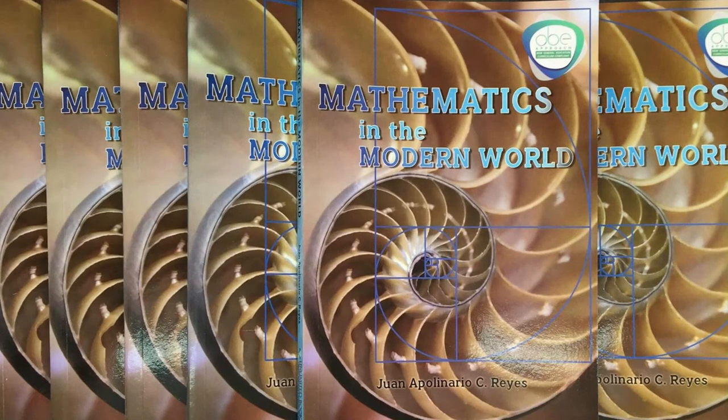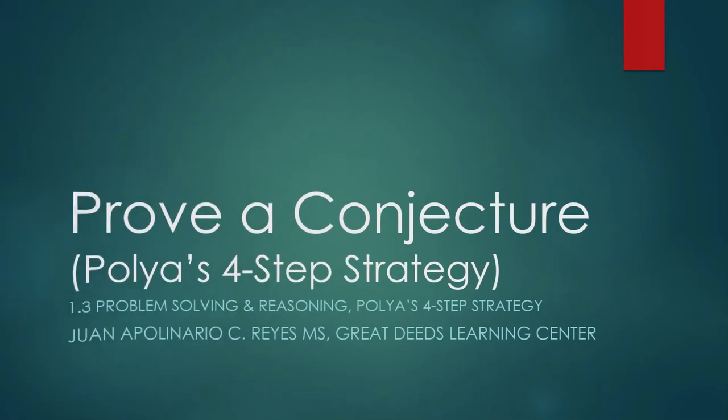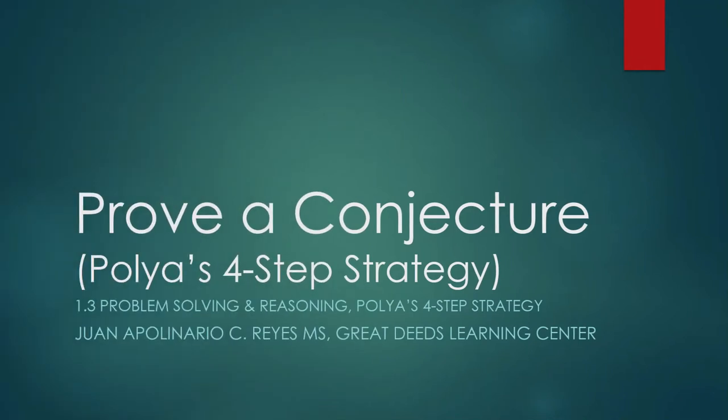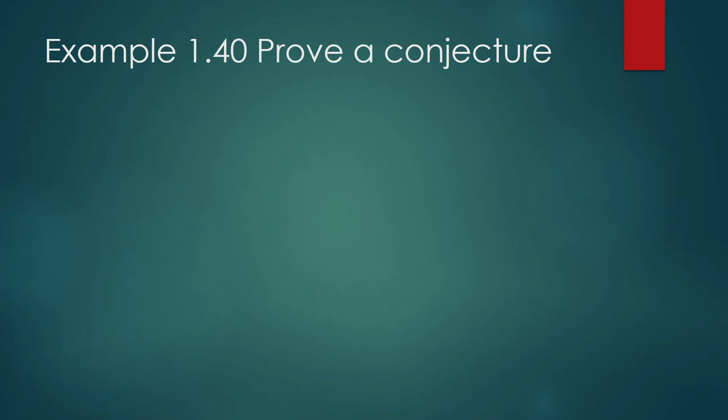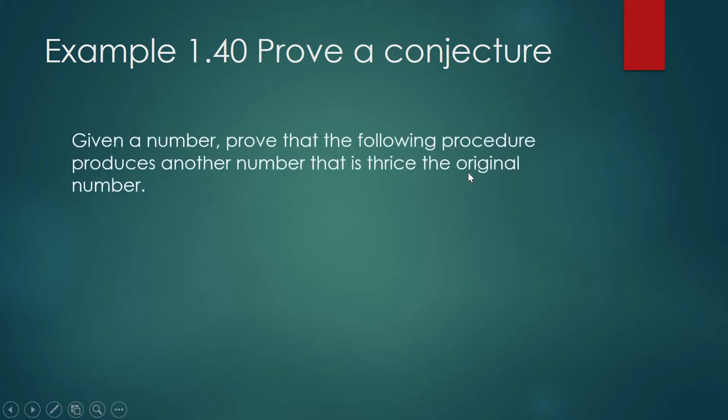In this video we shall show how to do Polya's four-step strategy to solve math problems, especially challenging math problems. We shall prove a conjecture - a conjecture is like a proposition, a hypothesis. Example 1.40: Prove a conjecture. Given a number, prove that the following procedure produces another number that is thrice the original number.